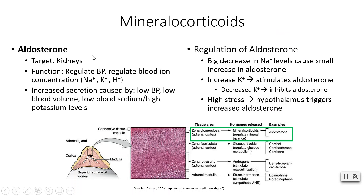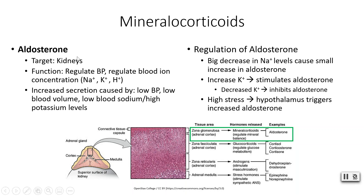Aldosterone is our mineralocorticoid of choice, from the glomerulosa layer — that first layer you encounter going superficial to deep. Aldosterone targets your kidneys and is one of the biggest players with regards to regulating your blood pressure. What does aldosterone do? It helps you regulate blood ion concentrations — things like sodium, potassium, and hydrogen ions.